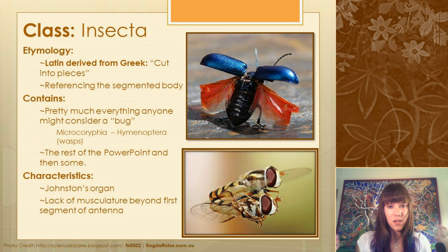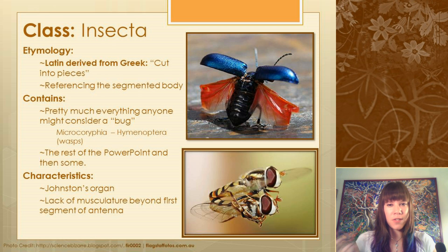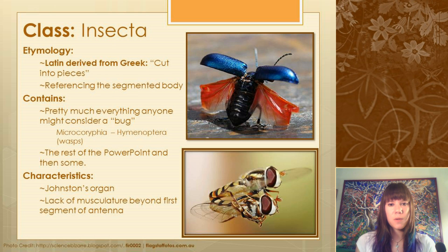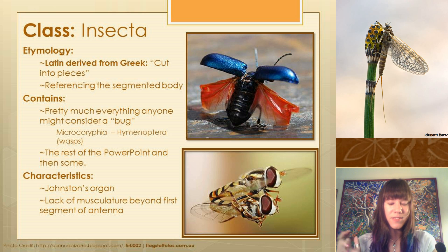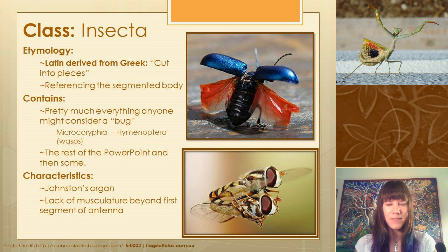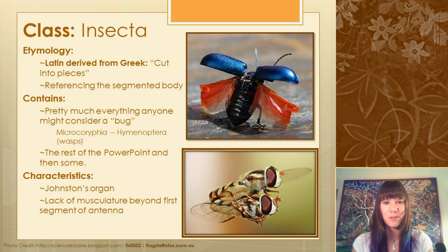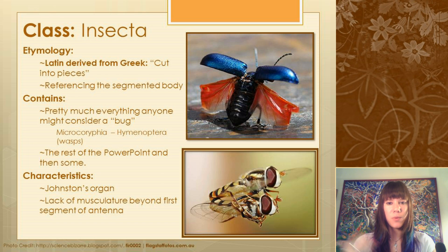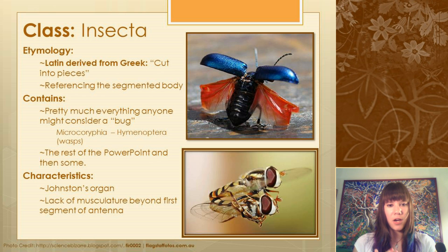Now we're finally in the class Insecta. Insecta comes from a Latin-Greek mix meaning 'cut into pieces,' referring to the segmented body. Insecta contains everything from here on out — dragonflies, mayflies, cicadas, beetles, flies, wasps, butterflies, caddisflies, stoneflies, mantises, cockroaches, termites, and more. Insect characteristics include six legs and three body segments, plus the Johnston's organ in the antennae that senses movement, and they lack musculature beyond the first antennal segment.